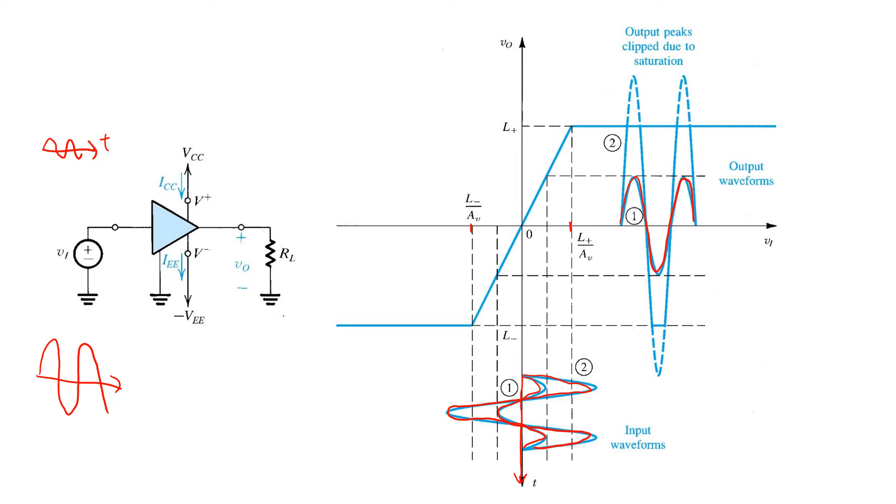And since the peaks exceed the linear range, what we see at the output is a sinusoid, but with the tops and bottoms clipped off.